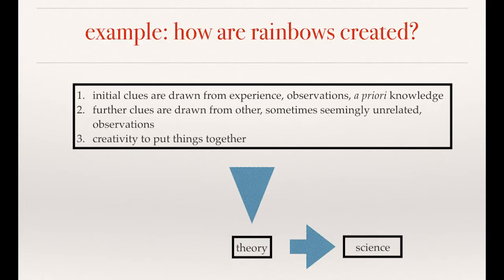So, how do we proceed? To give you an idea on how we go about in studying our physical world, I'm going to give a very simple example. For instance, how are rainbows created? We want to understand how rainbows are created, at least in our atmosphere. So, where do we start? Well, initial clues are drawn from our experience, our observations.